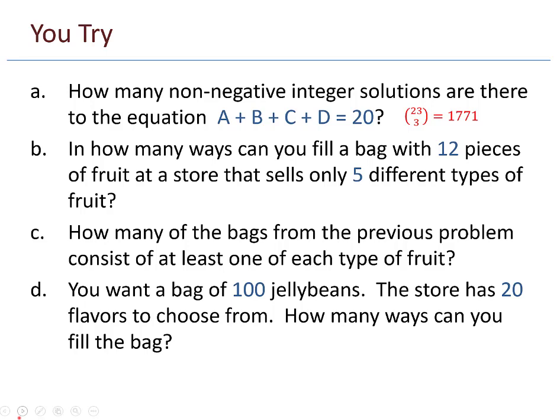Part B. In how many ways can you fill a bag with 12 pieces of fruit at a store that sells only five different types of fruit? So 12 objects, and there will be four dividers. So 16 choose four, 1820.